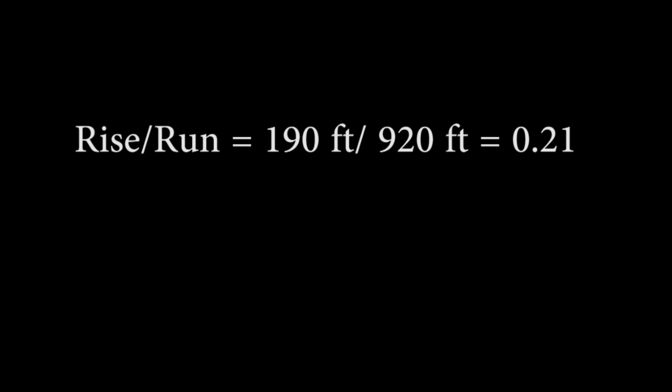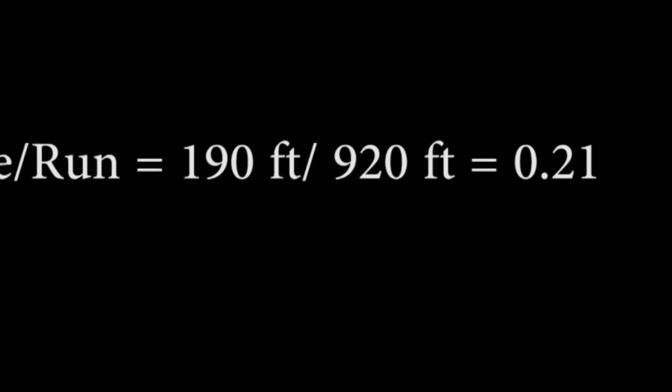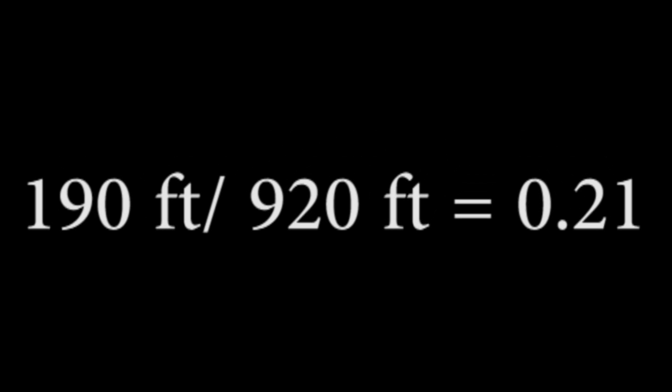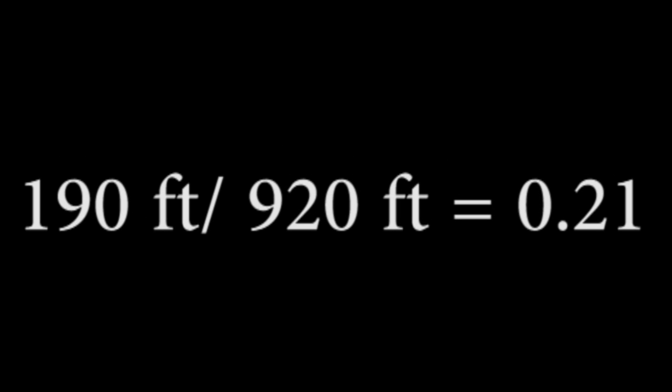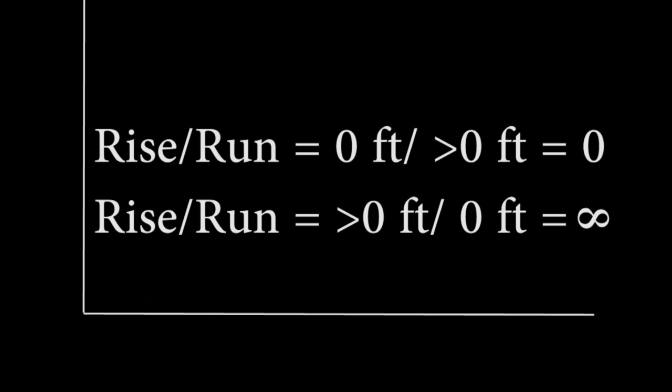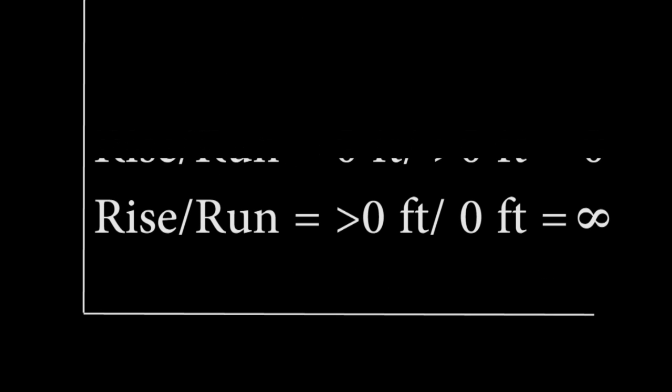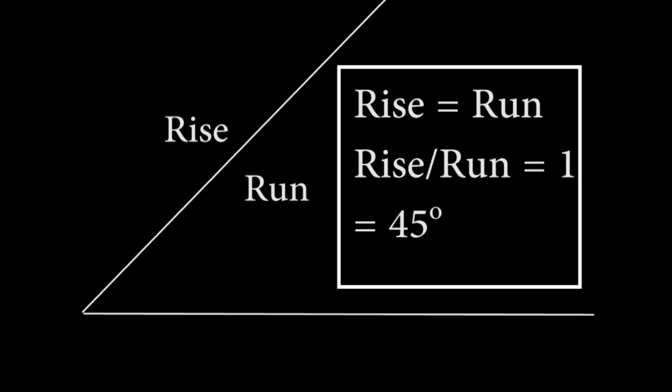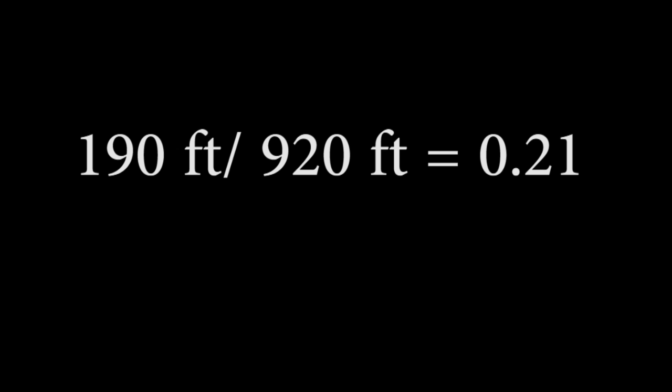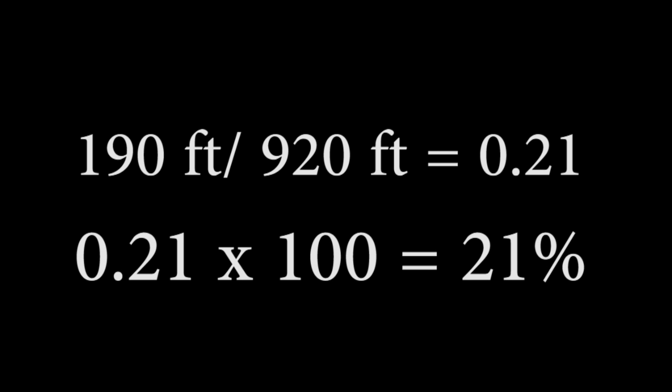So 190 feet divided by 920 feet is 0.21, and that's a unitless number because you did feet divided by feet. It's 0 when you're on a flat surface, infinite when you're vertical, and its value is 1 when you're at a 45-degree angle. If we multiply it by 100, we get the percent gradient, so this 0.21 slope is a 21% gradient. Because we're under a slope of 1, we must be under a 45-degree angle.